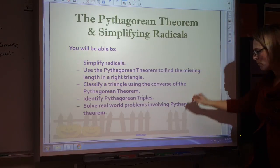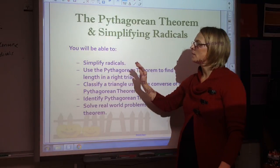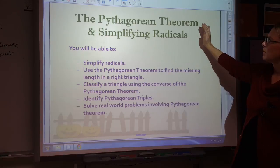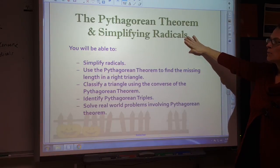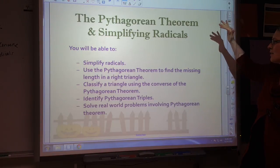Let's go through. This is 3.1 if you're going to follow along with the Unit 3 stuff. This is going to be the Pythagorean Theorem, and then I'm going to simplify radicals while doing the Pythagorean Theorem.